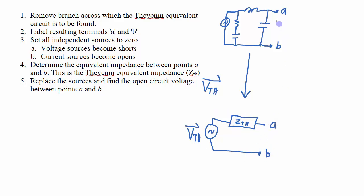So this circuit would be equivalent to this circuit. An advantage of doing that is that if my load between points A and B changes, looking at the original circuit I would have to redo all calculations with all of those components. However, if I've come up with the Thevenin equivalent circuit and I put a new load between A and B, I only have the source and the Thevenin equivalent impedance in my calculation, which makes my new analysis much easier to do.